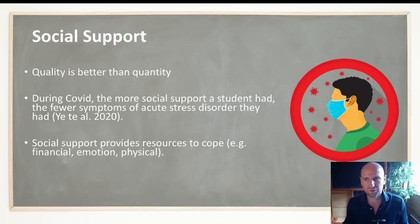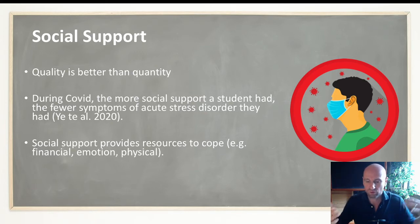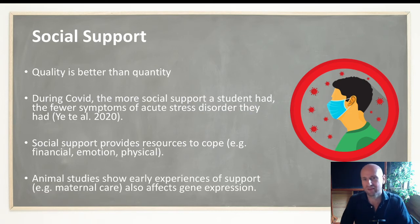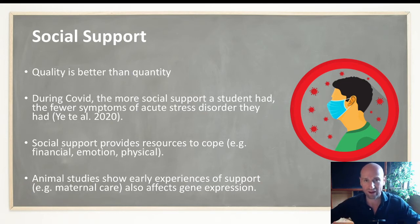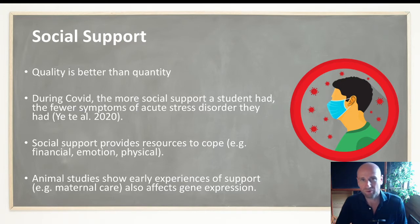Why does social support help protect against stress? Stress occurs when the demands of something outweigh our resources available to cope with it — we feel like we can't cope because we don't have the resources. Social support provides us with resources: time, emotional support, financial support, other people to help us out. Also, in animal studies, we found that how a mother rat grooms and licks and takes care of her pup affects not only its stress reaction later in life, but also its gene expression. So this link we have with social support is probably programmed deep into our DNA.